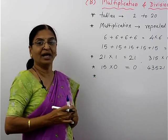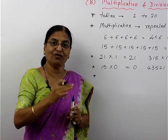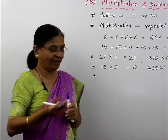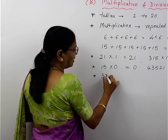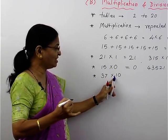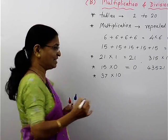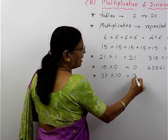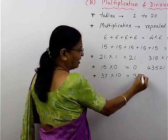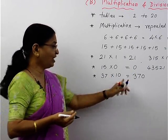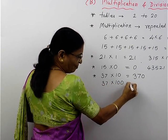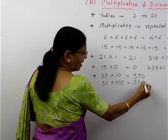The third important property is about the multiplication of a number by 10, 100 — that is, powers of 10. Suppose I want to multiply 37 by 10. It is not 1, it is not 0, but it is 10. Simply write the same number, 37, and add one 0 to it — so it becomes 370. Suppose I want to write 37 multiplied by 100, I will write 37 and add 2 zeros.